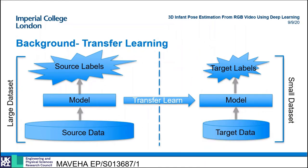One reason for this difference is that the adult domain contains large datasets such as Human3.6M and MPII. However, in the infant domain the availability of such data is limited, therefore training data-hungry deep learning CNNs on such small datasets was previously thought to be infeasible.